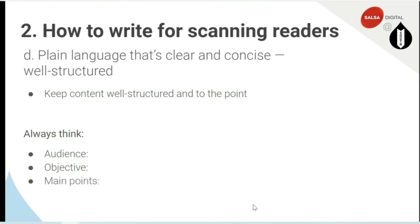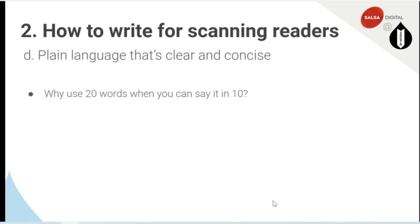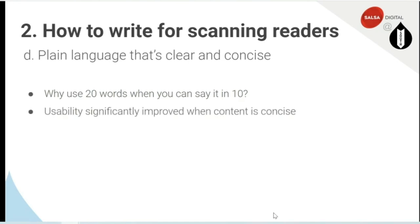It's really good to just, sometimes before you even start writing, write out what your main points are going to be in bullet point format. You may find they actually become your subheadings for your page. Why use 20 words when you can say it in 10? There have also been a lot of usability studies showing that content is much more usable when it's concise — people are able to rephrase what was being communicated more easily if it's written concisely. When you're using all the techniques together — making sure it's clear, concise, using bullet points, short sentences, simple words — then usability is significantly increased.